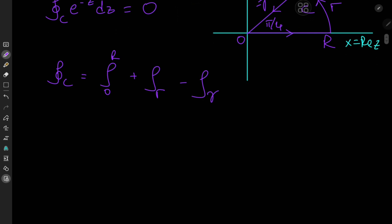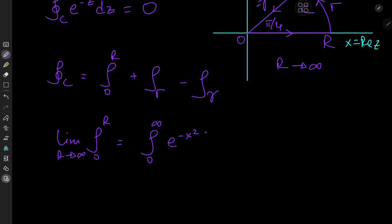We're interested in the limiting case of r going to infinity. The limit of the integral from zero to r as r tends to infinity equals the integral from zero to infinity of e to the negative x squared, where x replaces z because we're on the real line. This is the Gaussian integral, which evaluates to one half of root π.